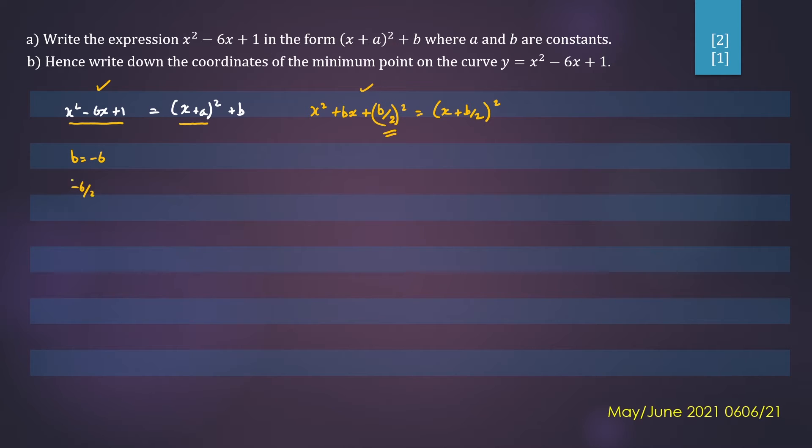So negative 6 divided by 2 to the power 2 will give you 9. So what we'll do is add that into our expression. We have x squared minus 6x plus 9. This is our new calculated number. Then we have a plus 1. But because you've added a number to your expression, you need to subtract it. Otherwise, the expression has changed. So when you look at those two expressions, they're exactly the same.